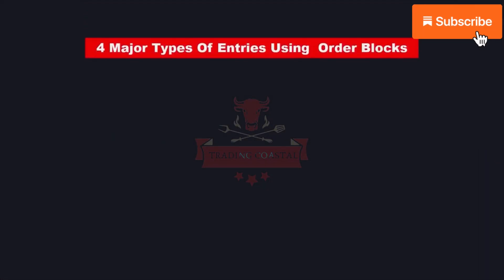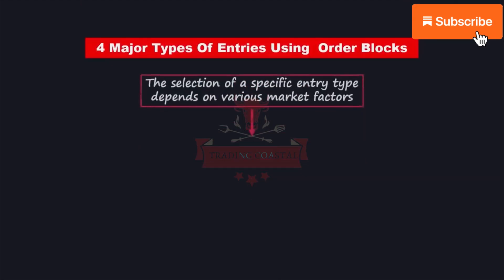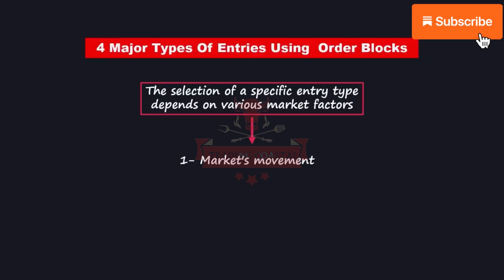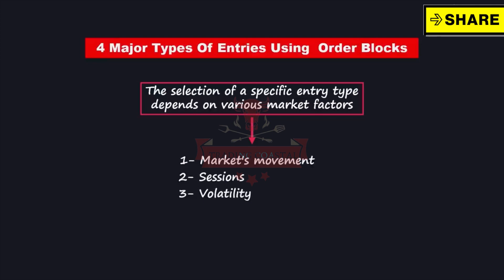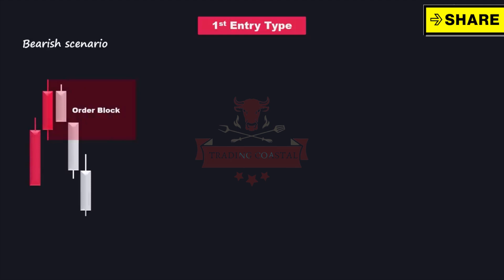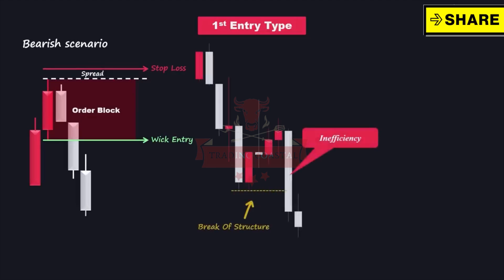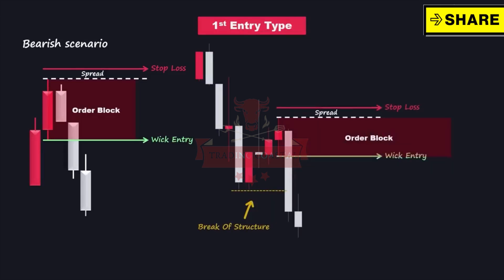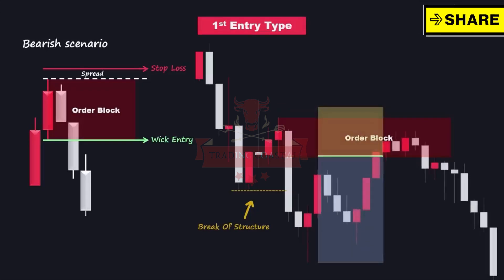There are four primary types of entries that we can employ when executing trades using order blocks. The selection of a specific entry type depends on various market factors such as the market's movement, sessions, volatility, and other relevant factors. The first entry method involves using the wicks to execute trades. After identifying a valid order block, we place our buy or sell order directly on the wick. In the case of a sell position, we place our stop loss a spread size above the higher wick of the order block. This entry setup provides a wider stop loss margin, which can reduce the reward-to-risk ratio. However, it increases the probability of your order being triggered since price may simply touch the wick and then push in your expected direction.